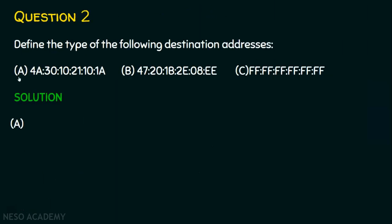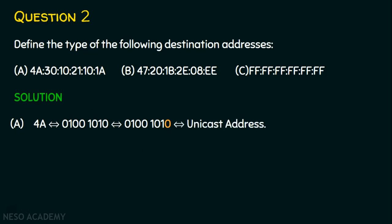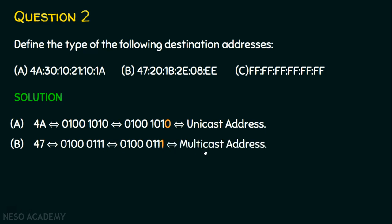Let's solve subdivision A. The first byte is 4A. Converting 4A to binary gives 01001010. The least significant bit of the first byte is 0, so it is a unicast address. Now for B: the first byte is 47, and its binary equivalent is 01000111. The least significant bit is 1, so it is a multicast address.